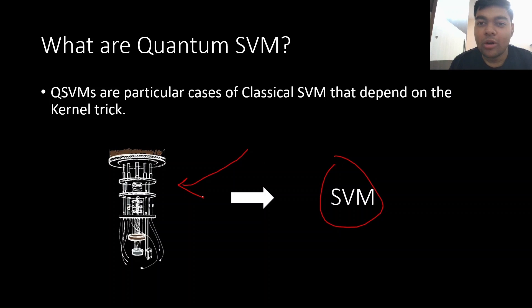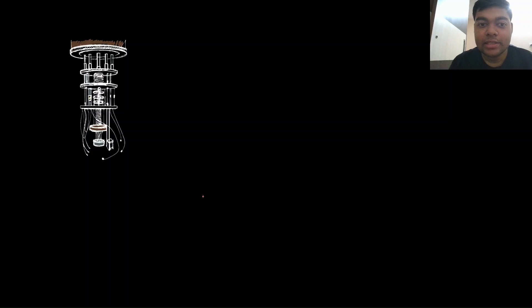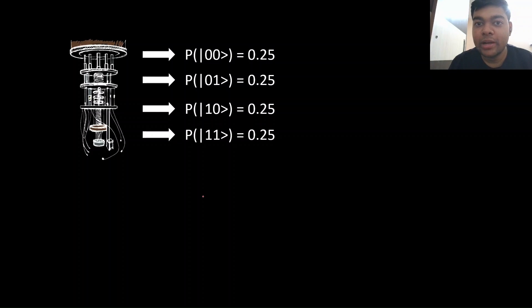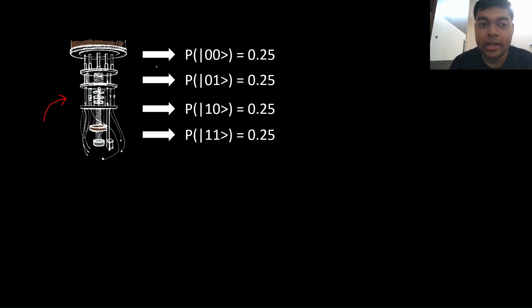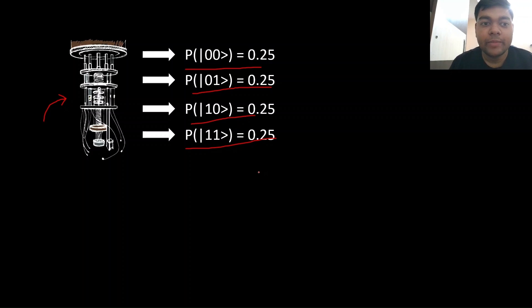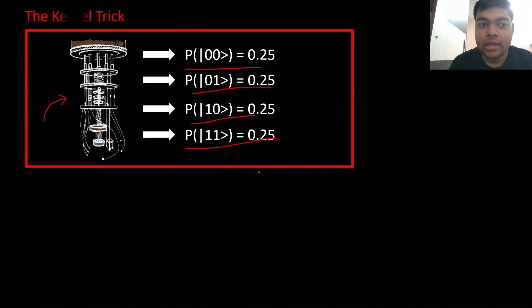But what can a quantum computer do? What is it that we can use a quantum computer for? A quantum computer is essentially good at giving you the probabilities of states. You give a quantum computer a quantum circuit, it executes the quantum circuit, and in return it will give you the probability of each possible state that you might find at the end. That's what a quantum computer is good at doing. This is the key property of a quantum computer, and we need to utilize this property inside the kernel trick.